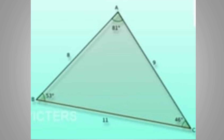What angle is opposite to AB? It is 46 degrees — the smallest angle. The biggest side is B and C, which is 11 cm. The opposite angle, angle A, is 73 degrees — that is the biggest angle.